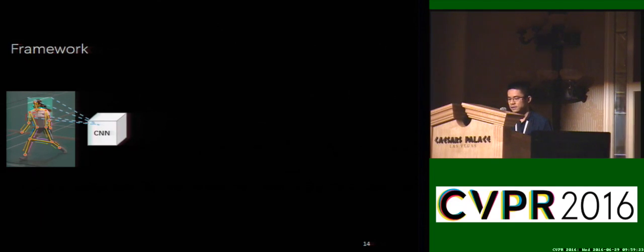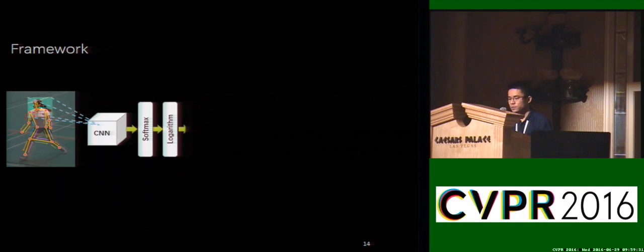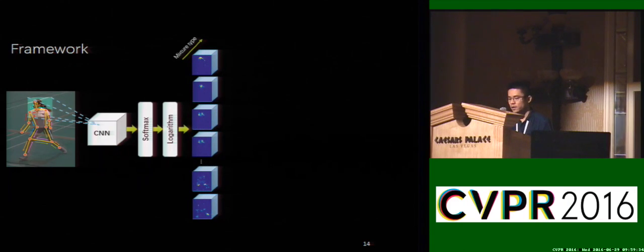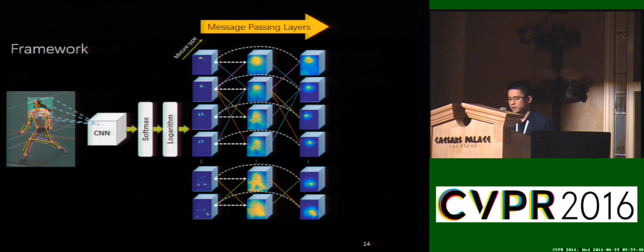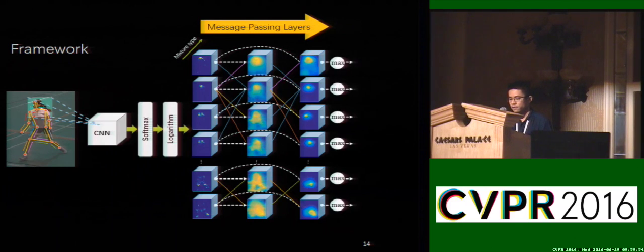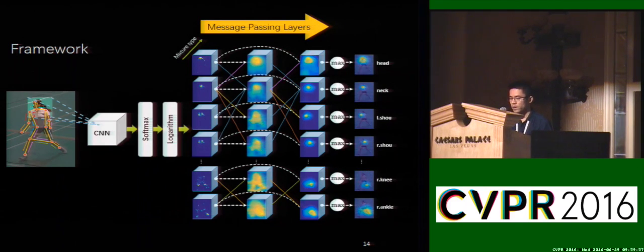The first component is a front-end CNN for learning feature representations of body parts, followed by a softmax layer and a logarithm layer. The output of the front-end CNN are score maps of body parts with multiple mixture types. The second component is the message-parsing layers for conducting inference and learning on the structures of body parts. Each message-parsing layer performs one iteration of the message-passing algorithm in a forward pass. Finally, the final score map of each part is obtained by computing the maximum value over mixture parts.